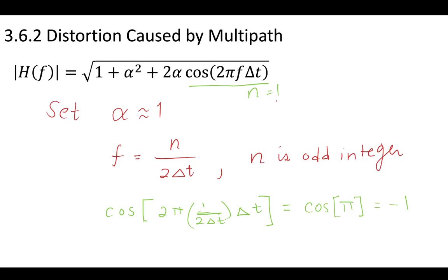And if we set n equal to 1, in this case, so the first form of this frequency, we can plug in this term into this f, and we'll see that the 2 cancels out, these delta t's cancel out, and we're left with a pi. Cosine of pi is equal to minus 1.